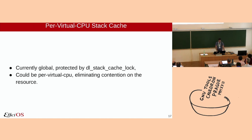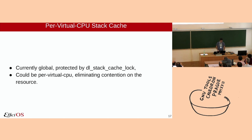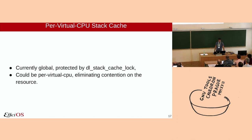The stack cache in glibc: when you exit a thread, glibc doesn't return the memory to the kernel, especially the stack, which includes space for the stack, thread local storage, and the process descriptor. It keeps it around because it's cache-hot and can be reused by an upcoming thread. That stack cache is a global resource per process, protected by a DL stack cache lock. We could make it per-virtual-CPU, so all accesses would be local, extremely fast, and eliminate the global lock.